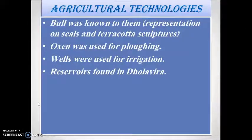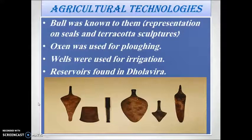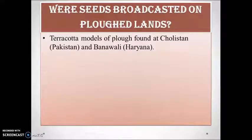The grains found at various Harappan civilization sites confirm that agriculture was practiced. However, it is very difficult to reconstruct actual agriculture practices. As discussed, the bull was known to them because we have representations on seals and in terracotta sculptures. Oxen were also used for plowing. Wells were used for irrigation, and a reservoir was also found in Dholavira, which indicates they stored water for irrigation. Seeds were broadcasted on plowed lands — land was first plowed and then seeds were scattered — because the plow was used.